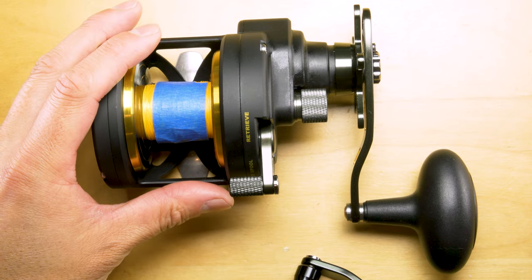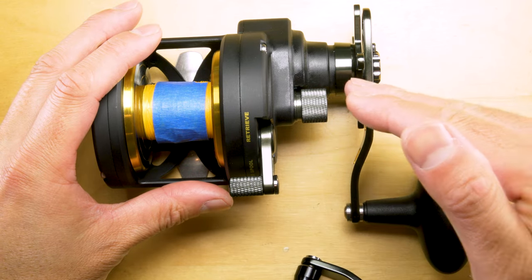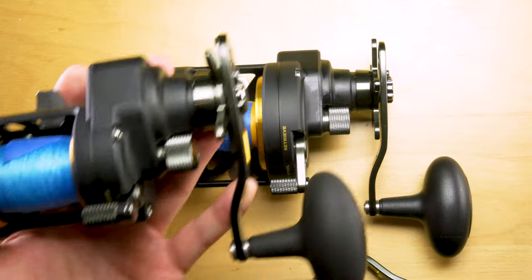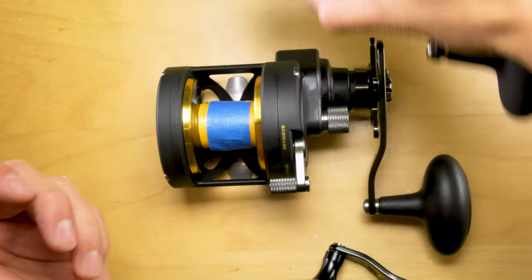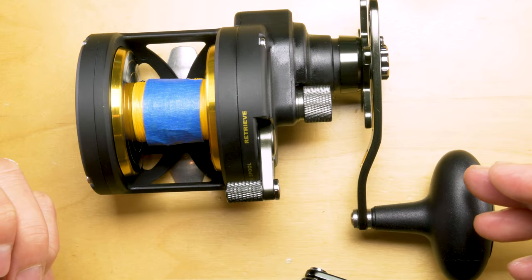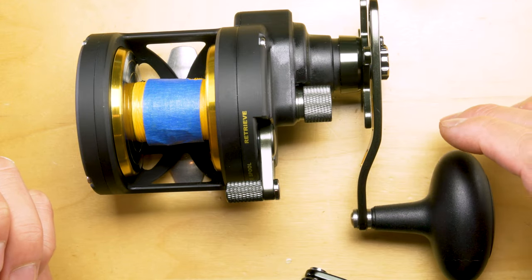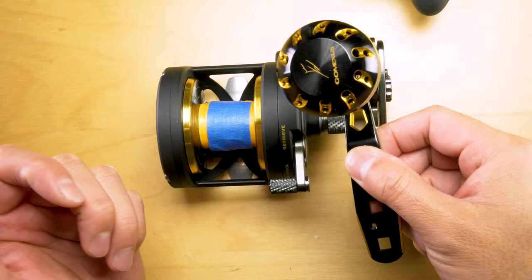Got a Penn 25N here and these 25Ns, the 30, the 15, they all come with the same egg knob size from the factory. It's a little bit smaller. You can get the larger one from Penn which comes on the 40 and the 60, but I opted for this.